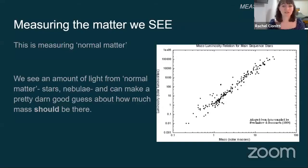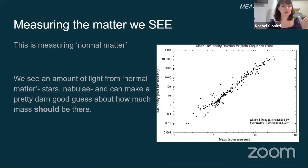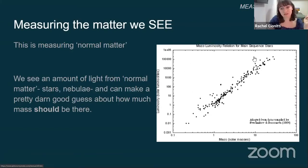The way we can do this is using a mass-luminosity relation, which essentially means if something has a certain mass, it usually has a correlated brightness, and this relationship is about one to one because it looks about like a straight line on a plot. So what that means is if we look at an object in space and it's bright to a certain degree to our telescope, we can say it's this bright, so it weighs about this much. We can make pretty good guesses about how much mass things have based on the amount of luminosity they give off.